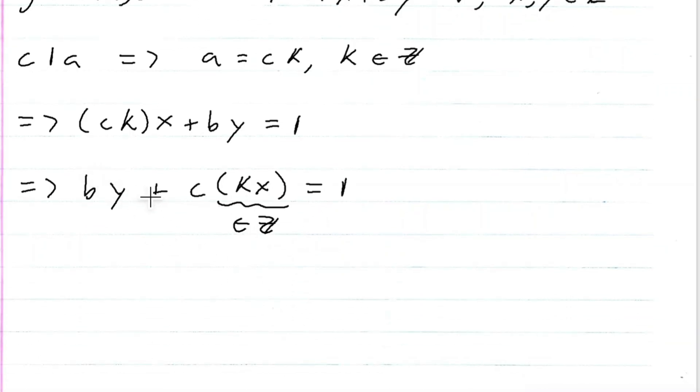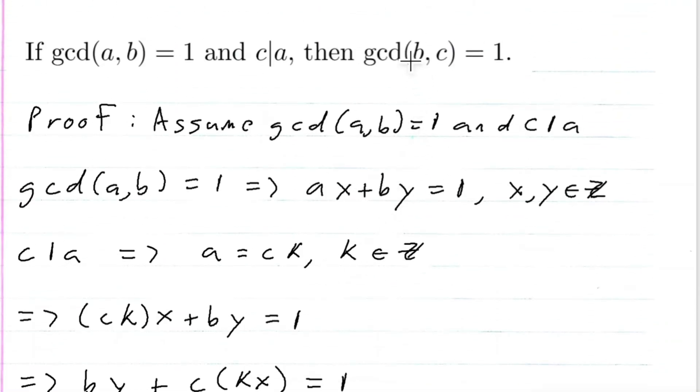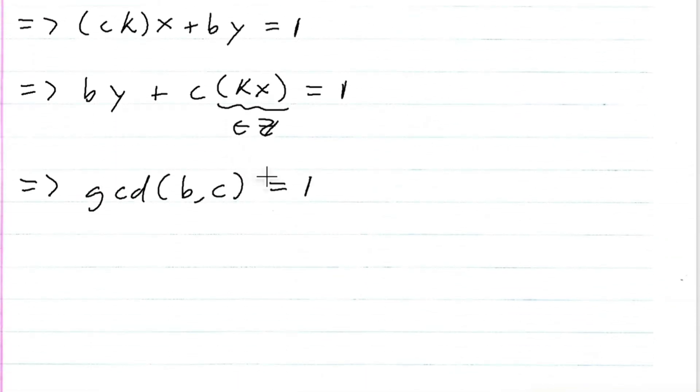So by theorem 2.3 in Burton's book, this means that the GCD of b and c is equal to 1, which is exactly what I wanted to show. That is the proof.